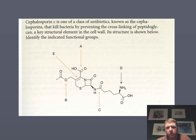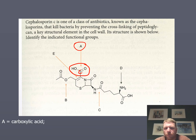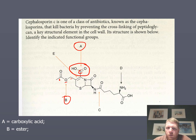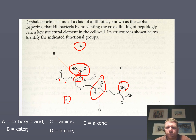Here's an example of a molecule with multiple different functional groups. Structure A has a carbon with a double-bonded oxygen and an OH — a carboxylic acid. Structure B has a carbon, an oxygen, and another carbon — that's an ester. In C we have an amide. In D we have an amine. In E we have an alkene — simply that double bond. We'll get into all these functional groups whenever it's relevant, but these are your most important ones to take away.